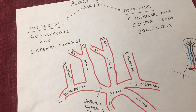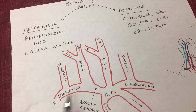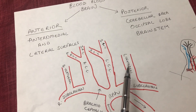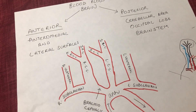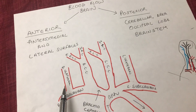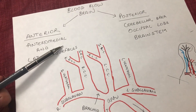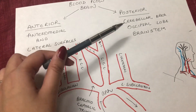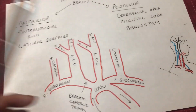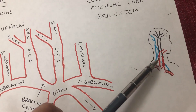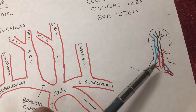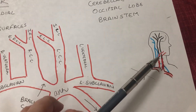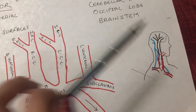What about the posterior circulation? That arises from the subclavians. The subclavian arteries, both right and left, give rise to the left vertebral artery and right vertebral artery. These two vertebral arteries ascend posteriorly in your neck, upwards to your brain, and supply blood to the cerebellum, occipital lobe, and the brainstem. In this picture, you can see the blue ones are the vertebral arteries ascending posteriorly, and the carotids are the black ones, ascending anterior to the vertebral arteries.